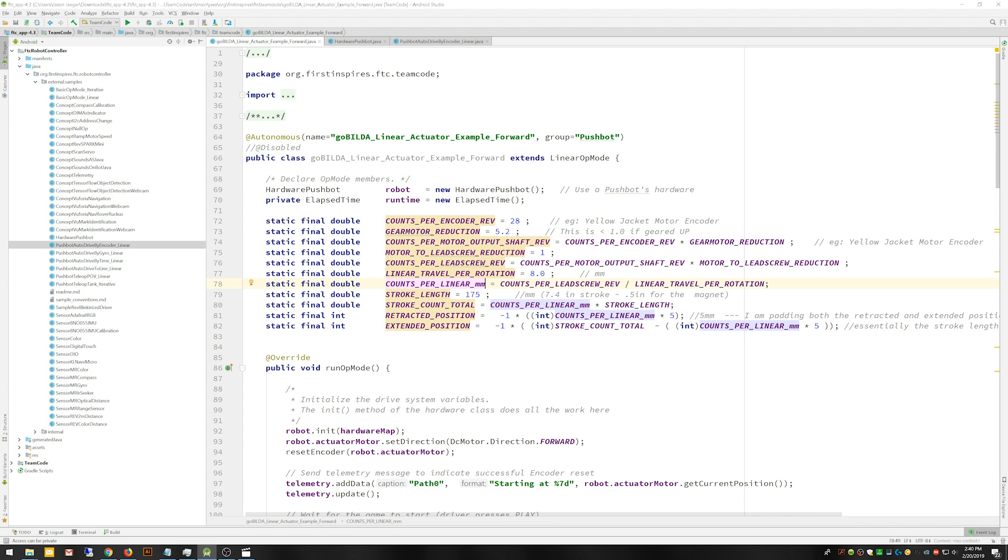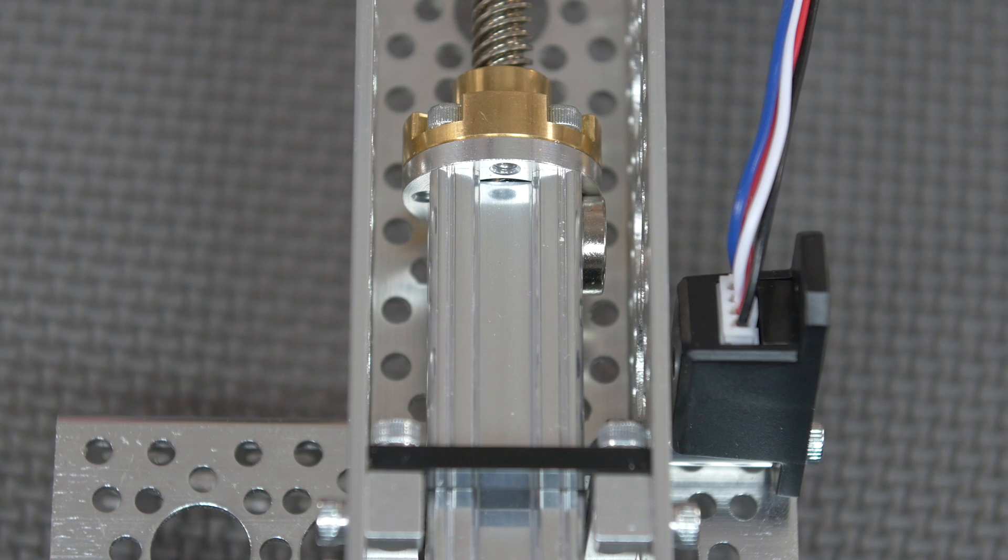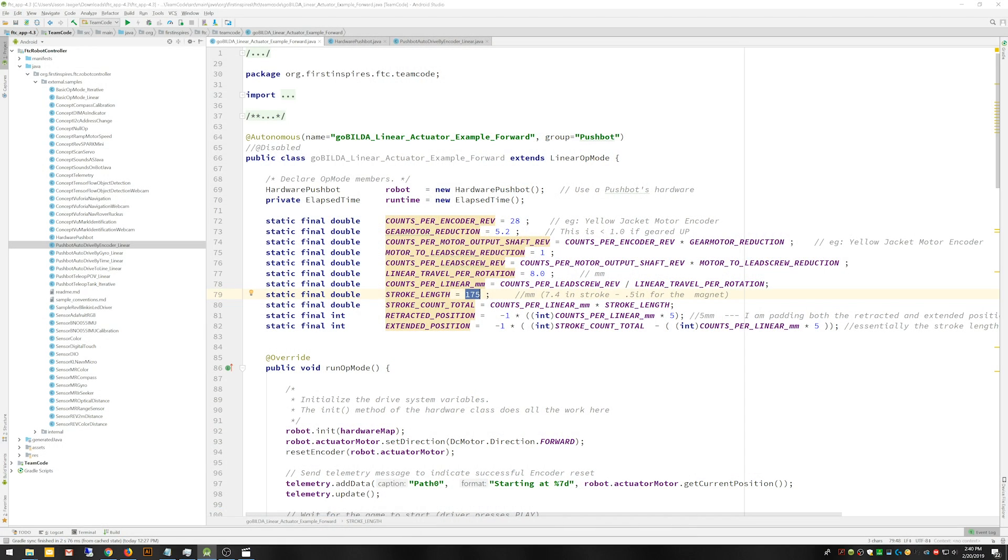We also want to factor in our overall stroke length for this kit. So if you got a longer lead screw and you change that up, you can factor that in pretty easily. But given the stroke length of 7.4 inches minus half an inch for the magnet that we've mounted inside of here, that comes out to approximately 175 millimeters. So with that information, we can figure out how many counts there are in an entire stroke.